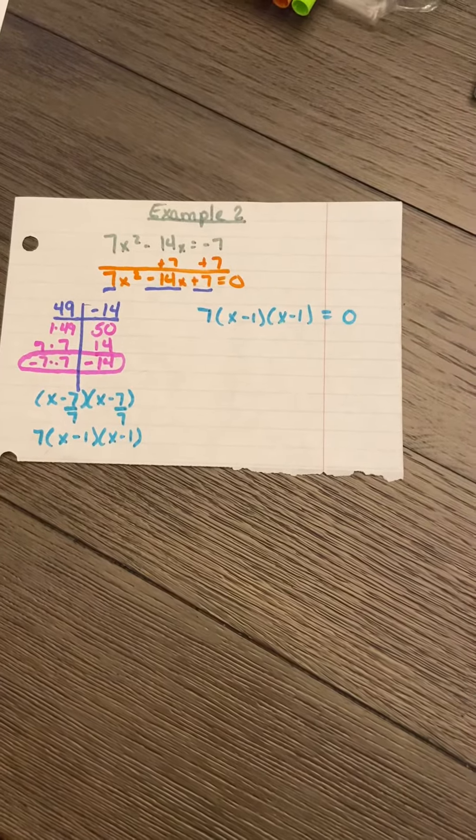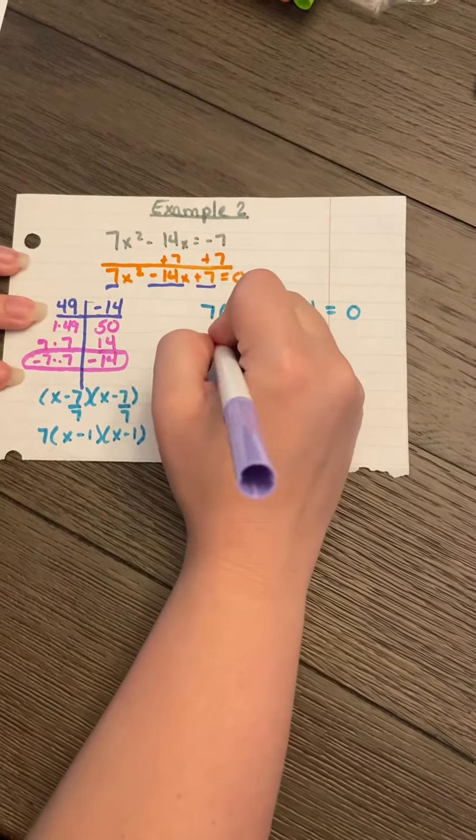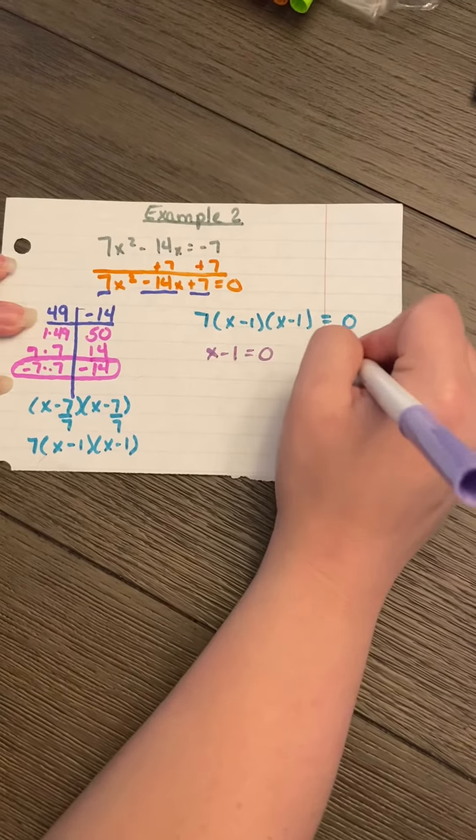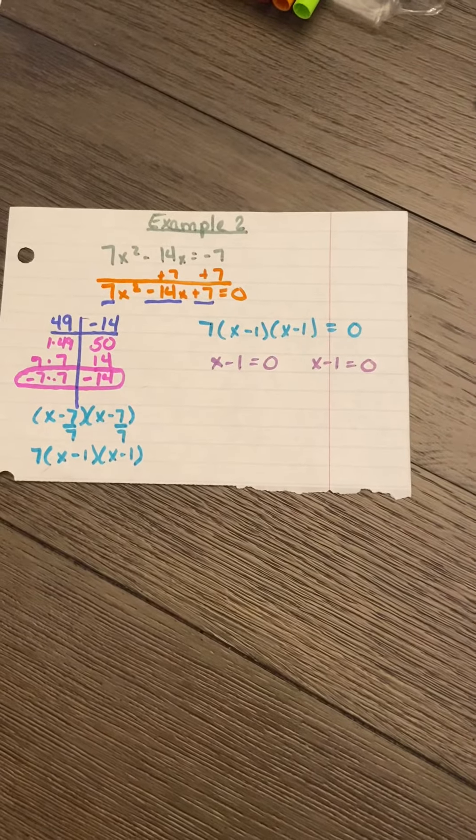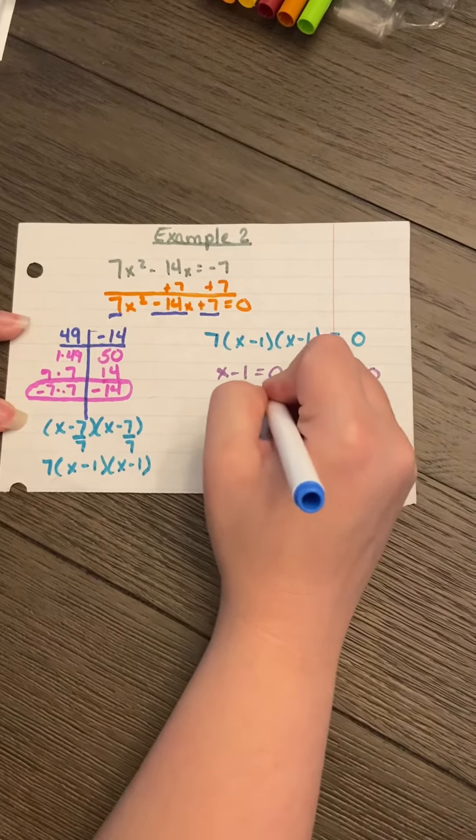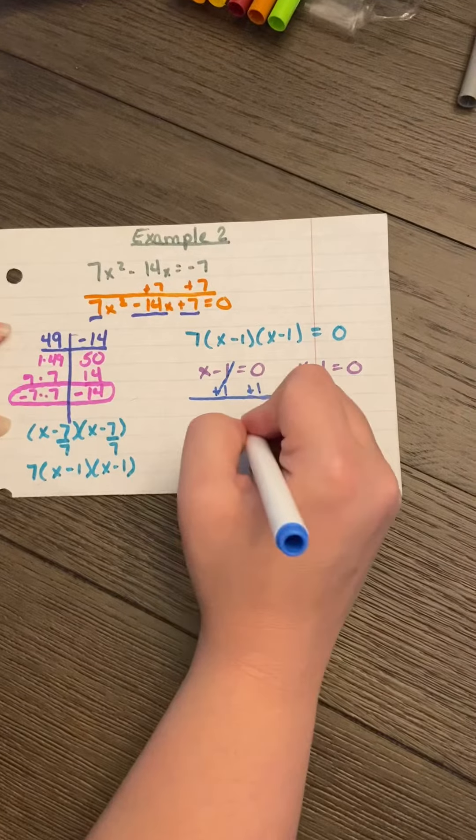The next step says to set each of your factors equal to 0 and solve for x. Add 1 to both sides. It's going to give me x = 1.